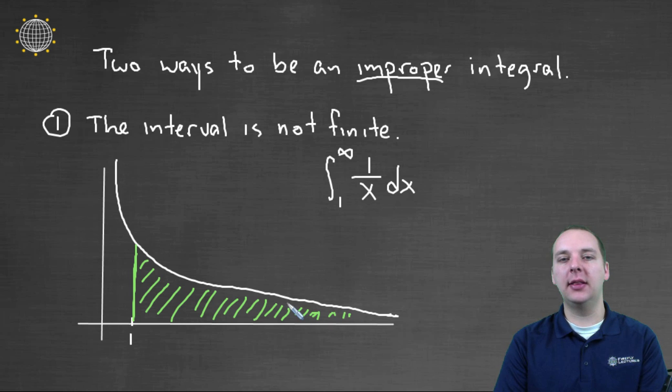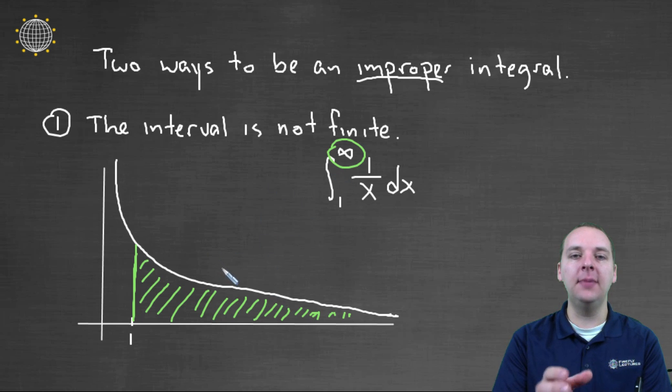Now you might say, well Devin, why are we even talking about this? Because isn't it true that if you go on forever, then you'll accumulate an infinite amount of area? And this question doesn't even make sense. Well I'll tell you, maybe not specifically for this example, but there are examples where if this function dwindles to zero fast enough, it is actually possible to have an integral go to infinity yet still equal a finite number. It's kind of a mind-blowing concept.